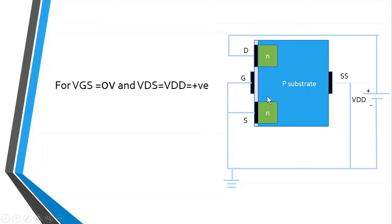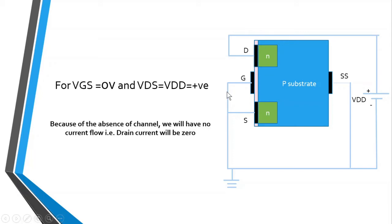As you can see, there is no channel between the drain and source terminals. For the first condition, when VGS is equal to zero volts and VDS is equal to VDD (some positive value), I have connected the gate and source terminals together and connected them to ground. Because of the absence of a channel, we will have no current flow — the drain current will be zero — since there is no path for current to flow.